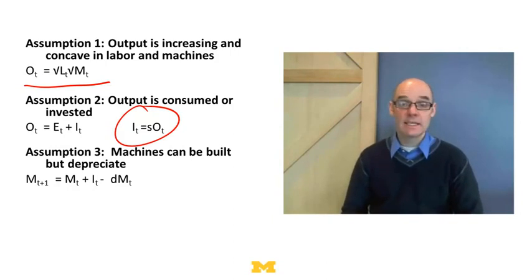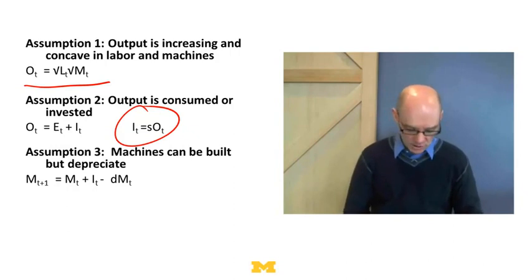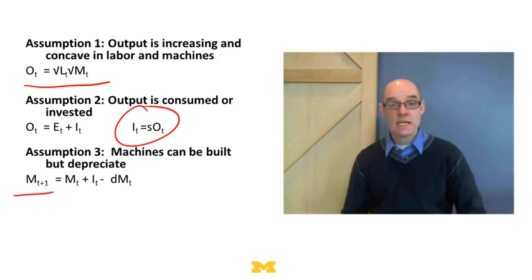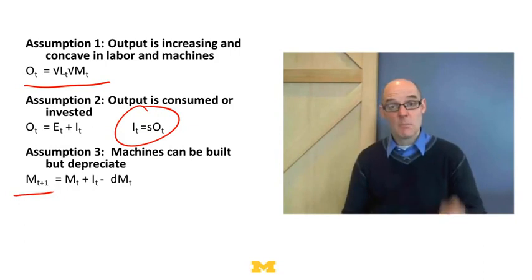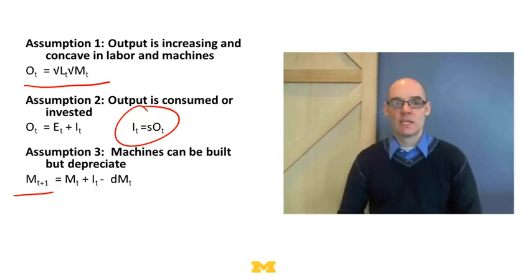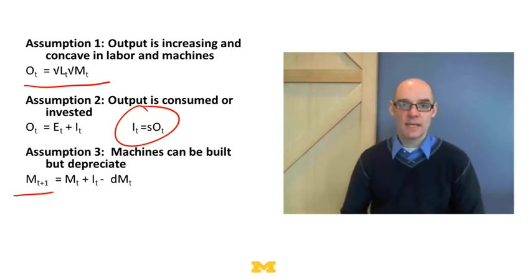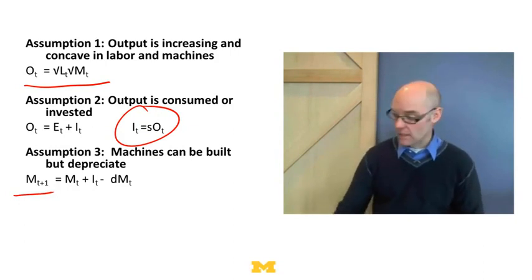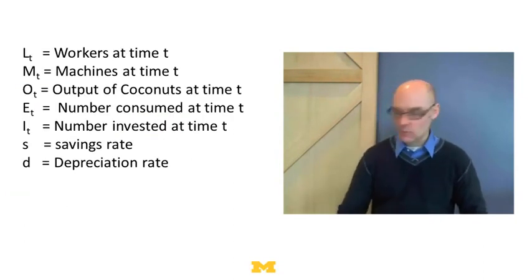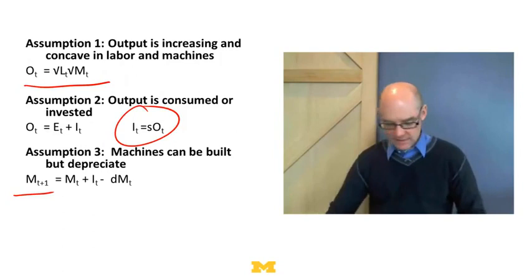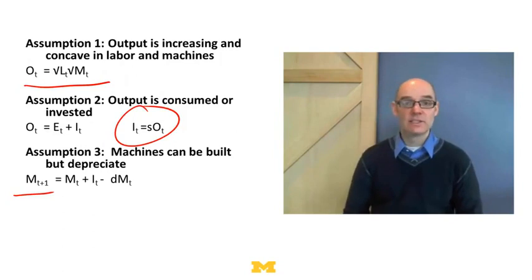The last equation: machines depreciate. The machines we have at time T+1 is going to be the machines we had at time T plus our investment, minus however much we depreciate. So we've got all these variables, and these equations help us make sense of those variables.